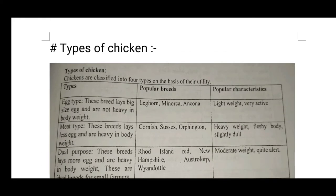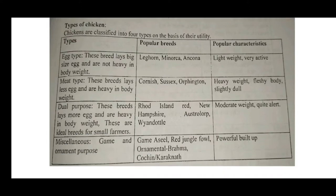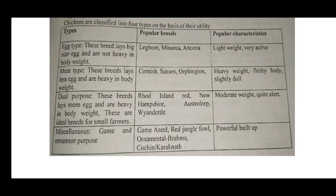The second topic is types of chicken. Chickens are classified into four types on the basis of their utility: egg type, meat type, double purpose, and miscellaneous. Egg type breeds lay big-size eggs and are not heavy in body weight. Meat type breeds lay fewer eggs and are heavy in weight. Double purpose breeds lay more eggs and are heavy in body weight — these are ideal for small farmers. Miscellaneous are for game and ornamental purposes.